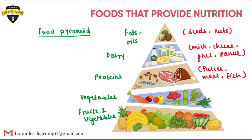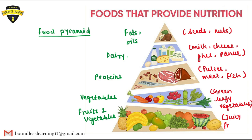Vegetables include all the green leafy vegetables like spinach. And lastly, we have to consume a lot of fruits, particularly juicy fruits like watermelon, muskmelon, bananas, pineapples, and oranges. These are the different foods that provide us nutrition.